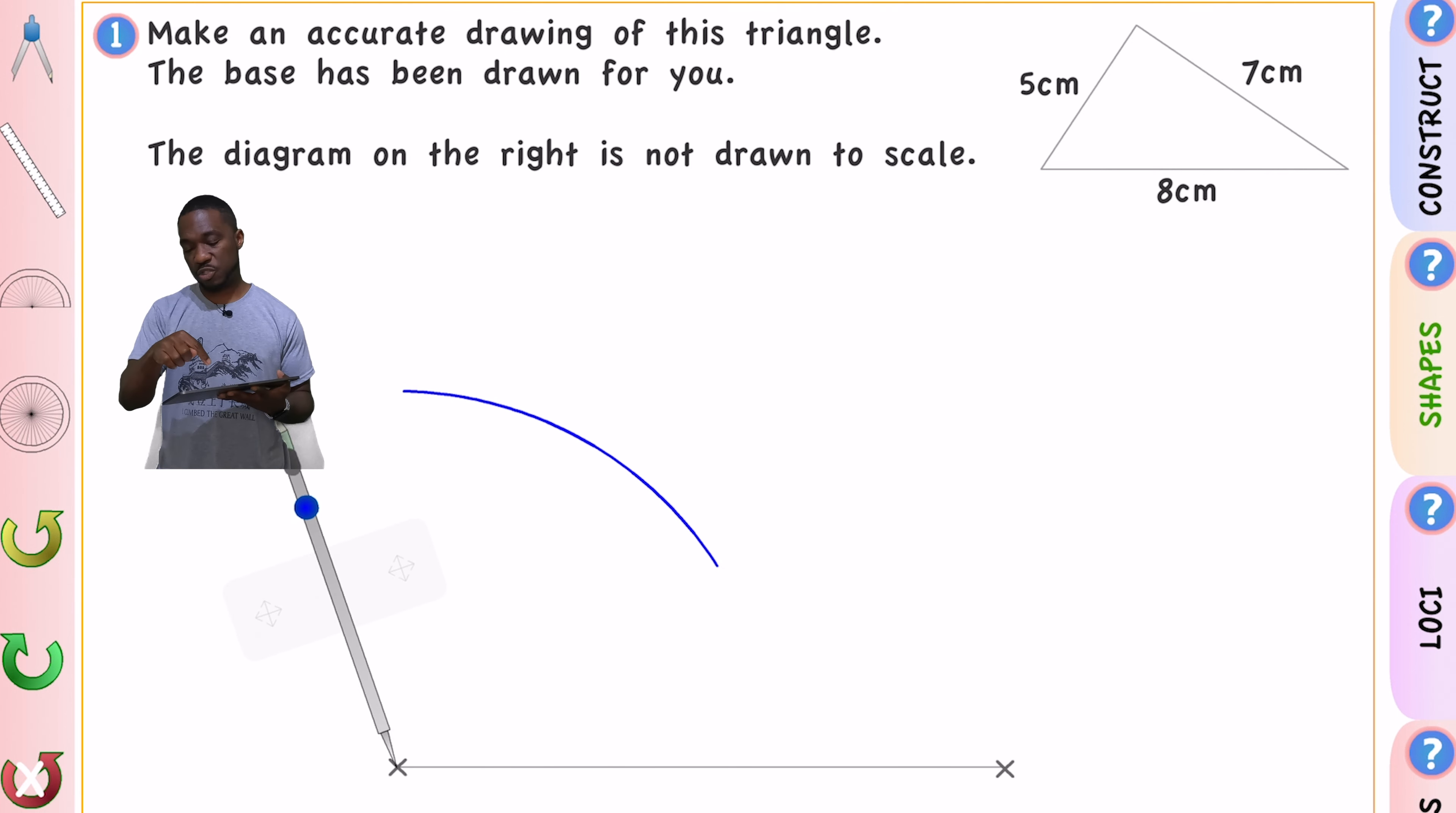Now anywhere on that arc is always five centimeters away from that point. Now on the next side of my triangle on the right hand side you need a seven centimeter line. So again take your compasses open it to seven, start at zero open to seven and then we go down to the other end of this line. Make sure it is super precise and then we just scribe an arc there.